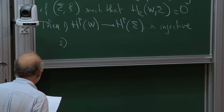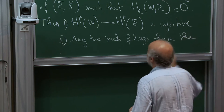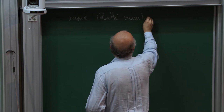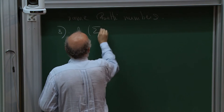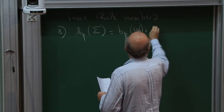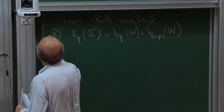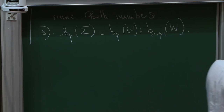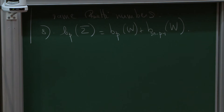The second remark is that any two such fillings have the same Betti numbers. The third remark is that the p-th Betti number of sigma is the p-th Betti number of W plus the (2N minus p minus 1)-th Betti number of W_2. We were a little bit surprised to discover that — once I tell you it's totally elementary, you can actually prove it in two lines yourself.